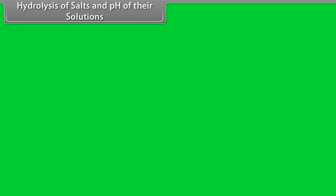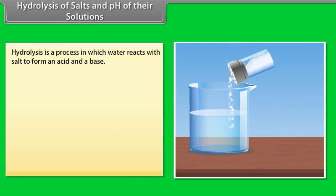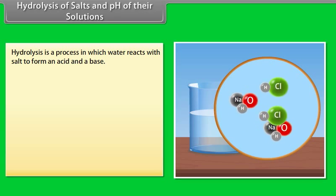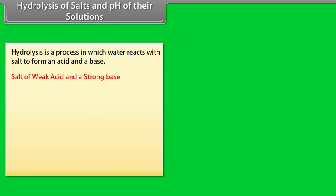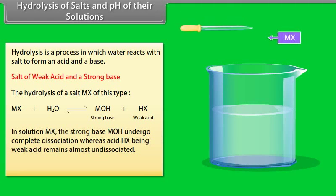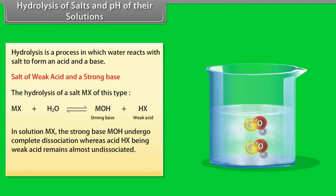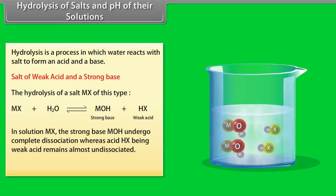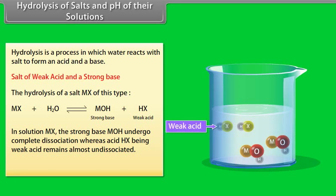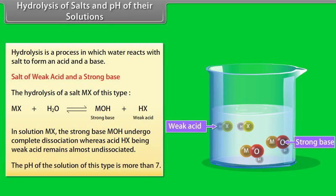Hydrolysis of salts and pH of their solutions: Hydrolysis is a process in which water reacts with a salt to form an acid and a base. For a salt of a weak acid and a strong base, the strong base MOH undergoes complete dissociation whereas the weak acid HX remains almost undissociated. The pH of the solution of this type is more than 7.